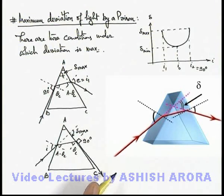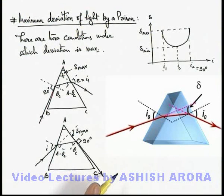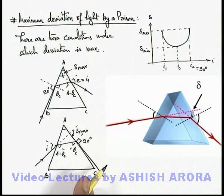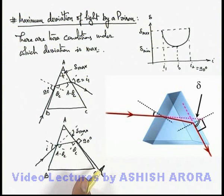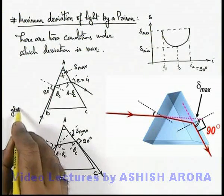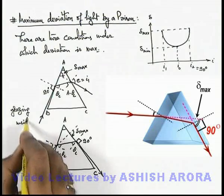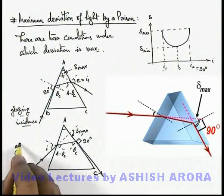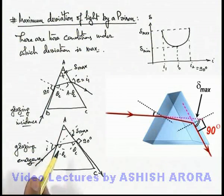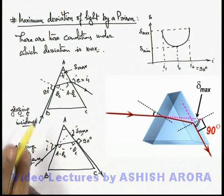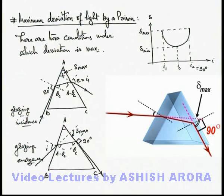And if this angle of incidence is decreased, again when it becomes i-not the deviation is minimum, and if i is decreased below i-not, again the value of deviation angle starts increasing. When the light ray is grazing along the other surface, or when the angle of emergence is 90 degrees, again the deviation angle will be maximum. So there are 2 situations: one is of grazing incidence, when the deviation angle is maximum, and the other is the situation of grazing emergence, when the angle of deviation is maximum. These are the 2 situations corresponding to maximum deviation of light passing through the prism.